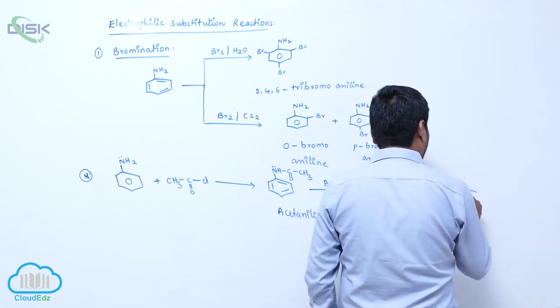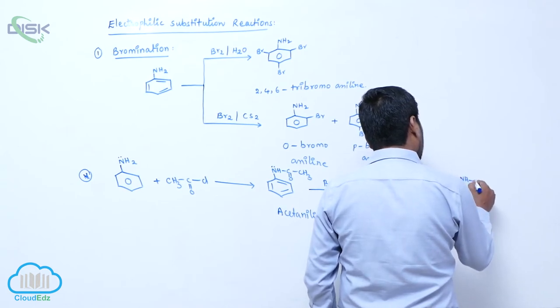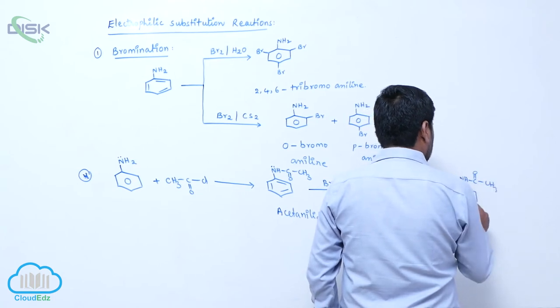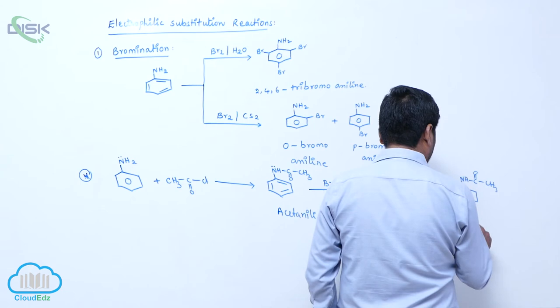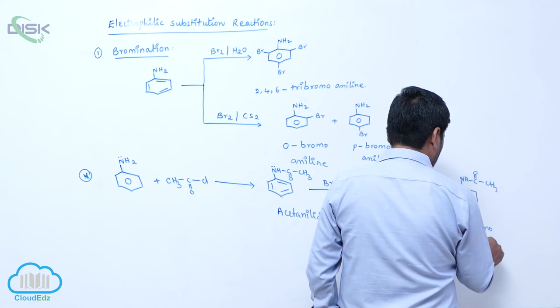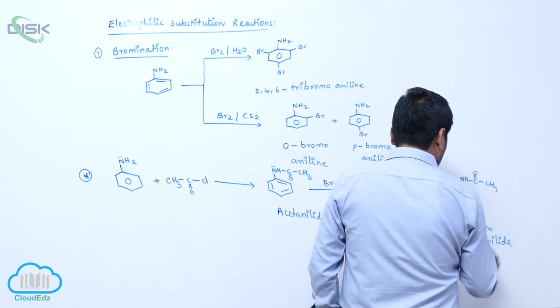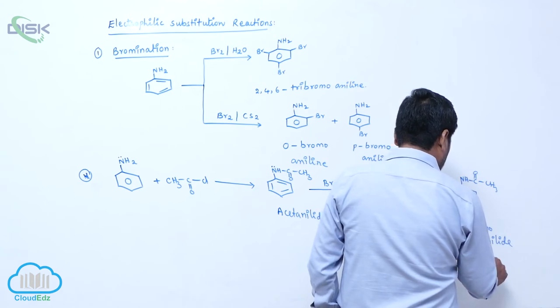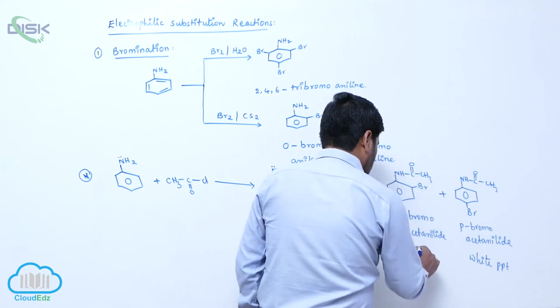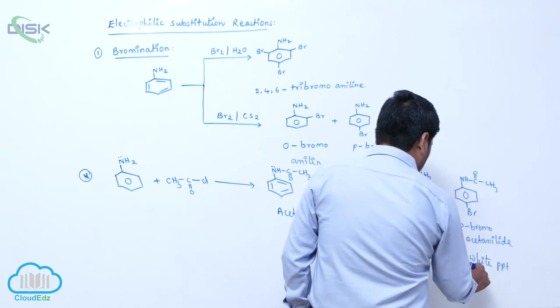Plus parabromoacetonilide as a white precipitate. NH-CO-CH3, this is parabromoacetonilide. This is minor product due to steric hindrance.